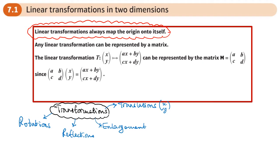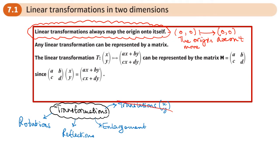Before the transformation, you're going to have a point at the origin, coordinate (0, 0), and it's going to end up at the origin. So the origin doesn't move. Which of these transformations won't move the origin? Well, it's not going to be a translation, because with a translation the origin moves — it moves somewhere else.